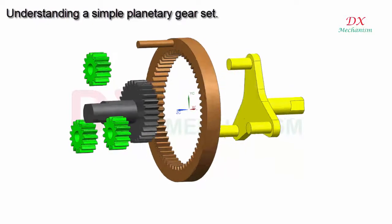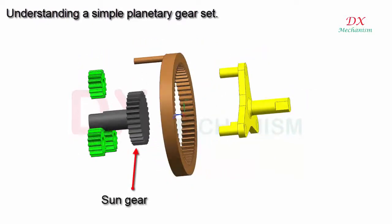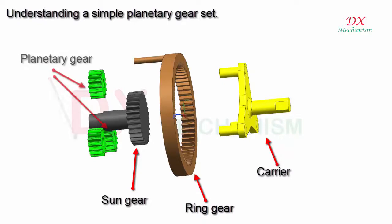There are four main items in a planetary gear set: sun gear, ring gear, carrier, and planetary gears.